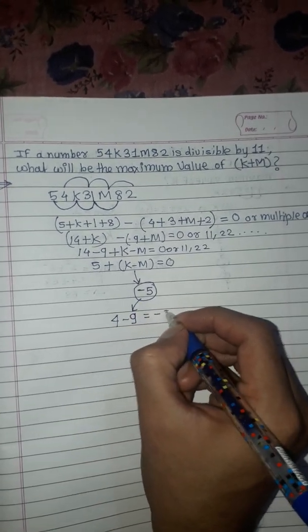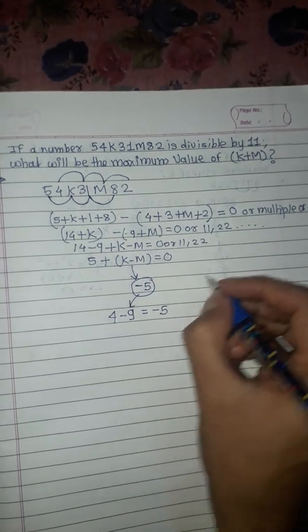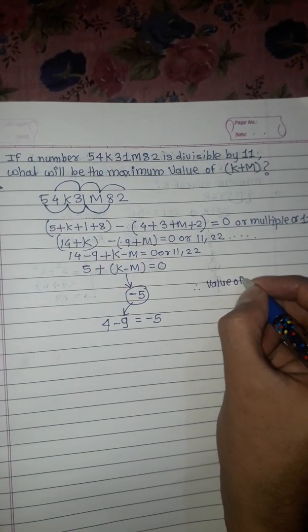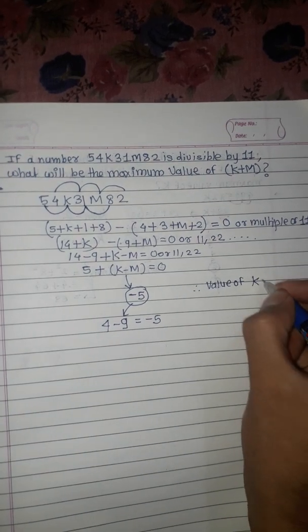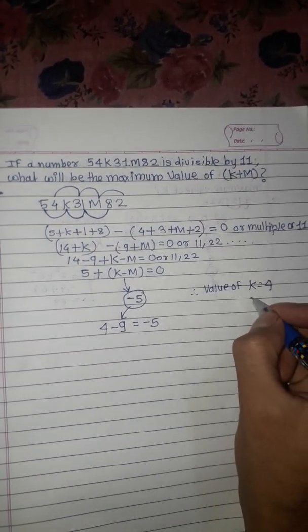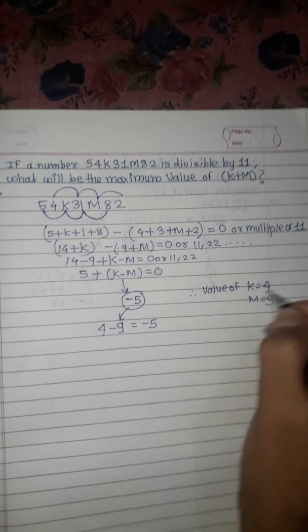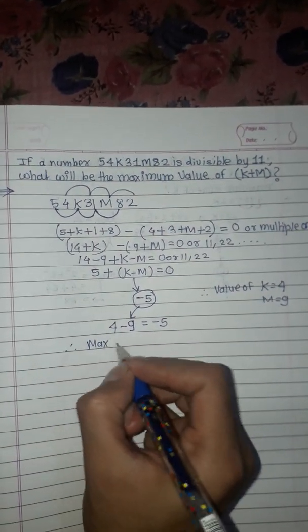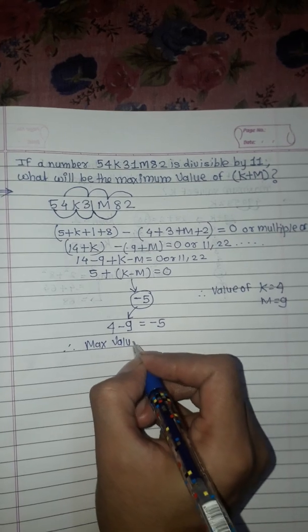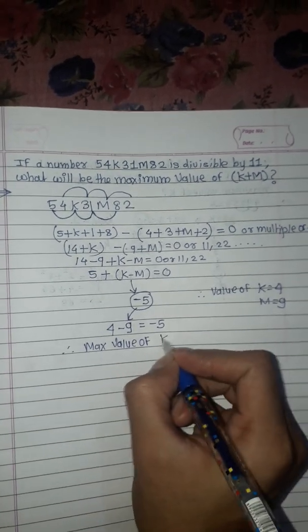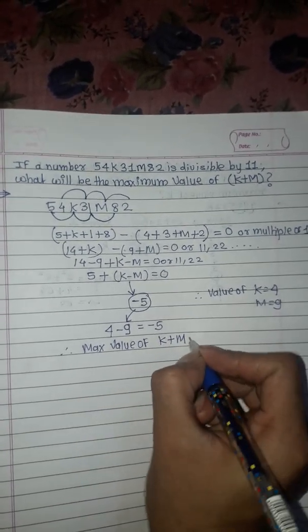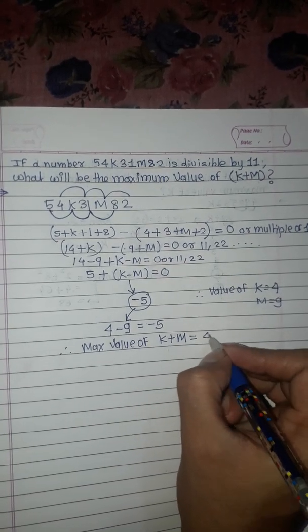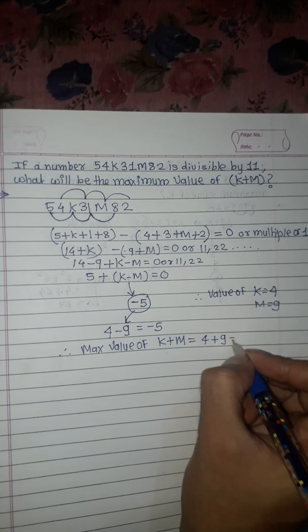Therefore the value of k is 4 and m is 9. The maximum value of k + m equals 4 + 9, which is 13.